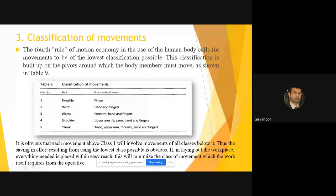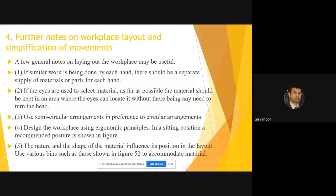Classification of movements. So fourth rule of motion economy is the use of human body which is to be in the lowest classification. Lowest classification means to use pivot is the knuckle and the finger. Obviously we can see that more movement is there with the higher classification which should be avoided as much as possible.